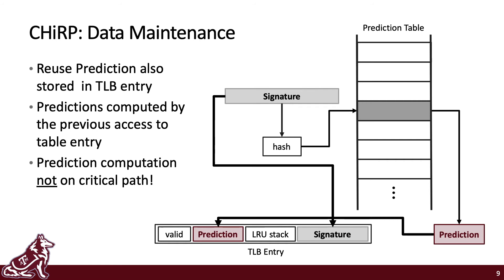The reuse prediction for the entry is also stored within the TLB entry. This prediction is computed beforehand by the previous access to the entry. The diagram to the right shows how a TLB entry signature leads to its own reuse prediction being calculated. First, the signature in the TLB entry is hashed to index the CHIRP prediction table. Next, the index counter is thresholded, and if found to be greater than the threshold, a prediction that the entry is dead is placed in the TLB entry. If the counter is less than the threshold, a prediction that the entry is alive is placed instead. This stored prediction is one ahead — meaning it is for the next time the entry is accessed — ensuring the prediction computation is off the critical path.